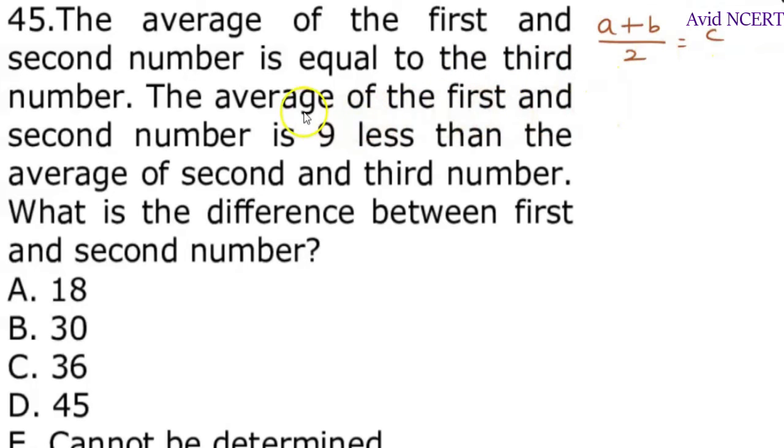From the second sentence, the average of first and second number, which is A plus B divided by 2, is 9 less than the average of second and third number. So, second and third number is B plus C by 2 minus 9. A plus B by 2 equals B plus C. Taking LCM, it becomes 18 divided by 2.